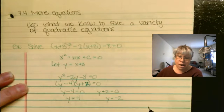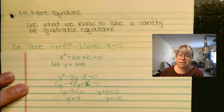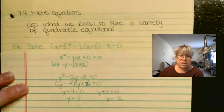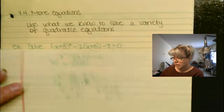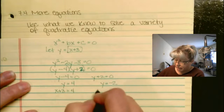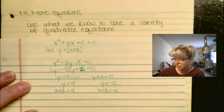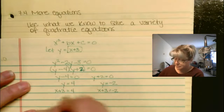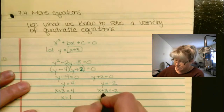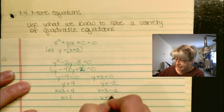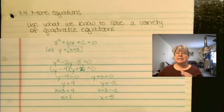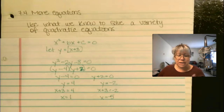But I didn't start off with y. I started off with x's — in fact, I started off with x plus 3's. So wherever I see a y now, I'm going to substitute back in x plus 3. That gives x plus 3 equals 4 and x plus 3 equals negative 2. Now let's solve for x: minus 3 on each side gives x equals 1 and x equals negative 5. So we can find the solution by substituting in another variable.